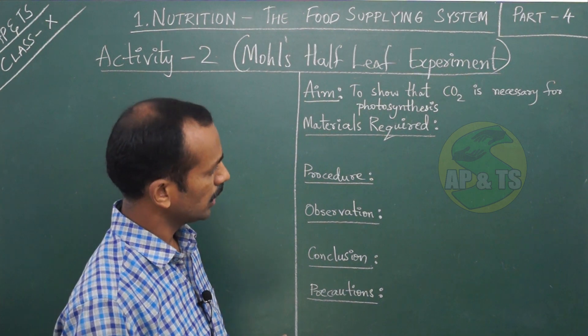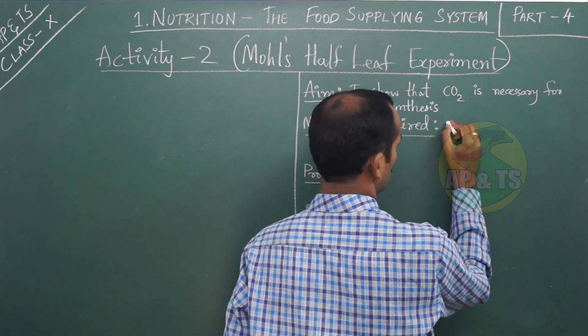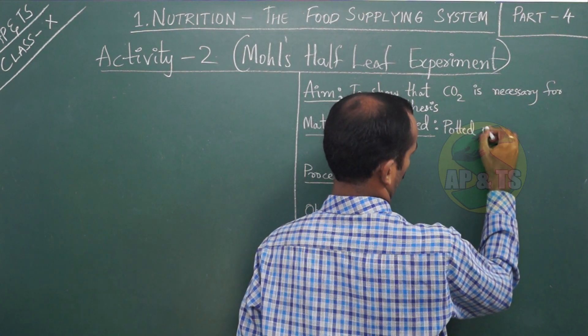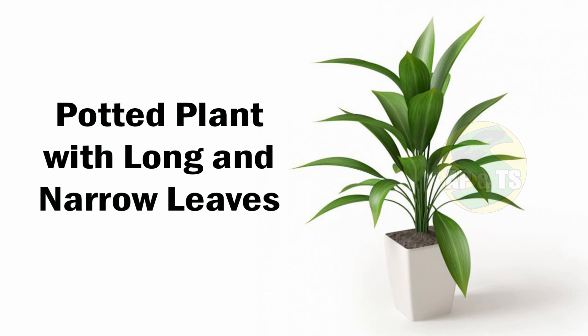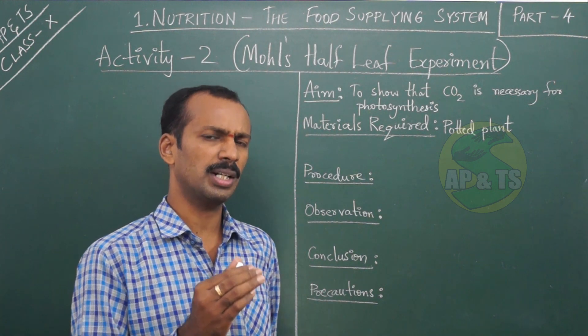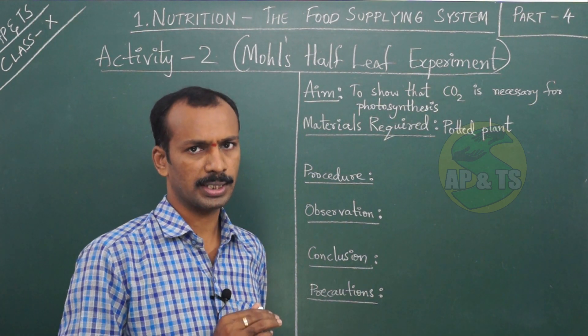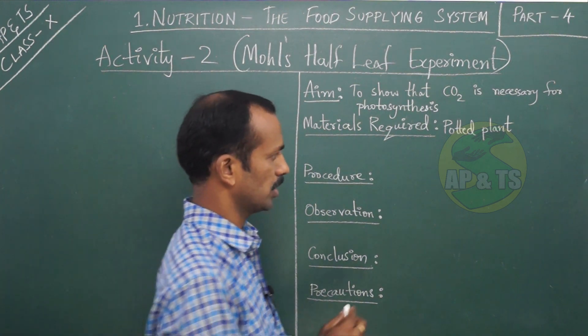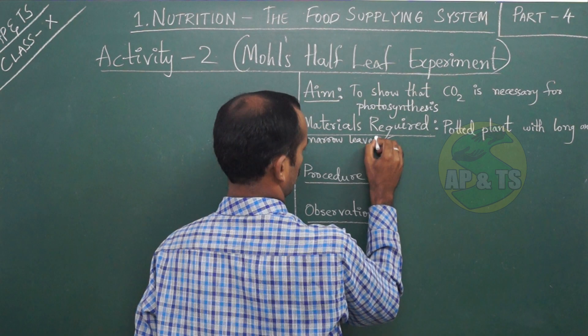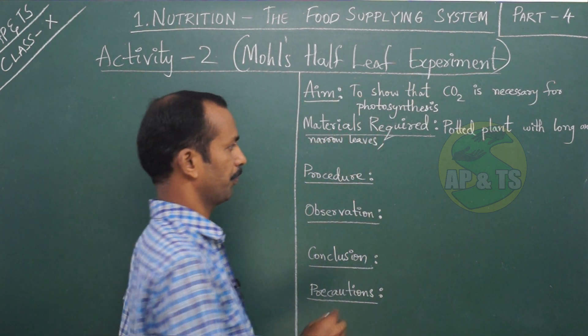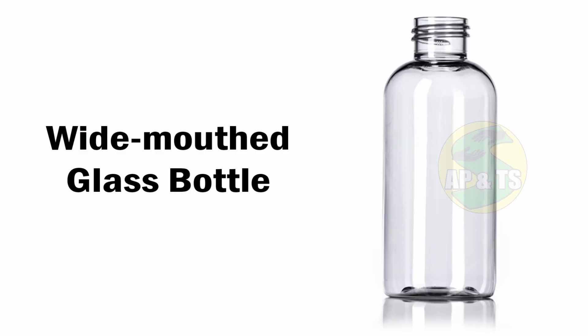The materials required are: a potted plant with long and narrow leaves. Why that particular type of plant? We will come to know as we go. So, a potted plant with long and narrow leaves, and a wide-mouthed glass bottle.